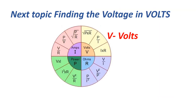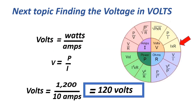The next topic is finding the voltage in volts. Volts equals watts over amps, or V equals P over I. Equals 1200 over 10, equals 120 volts.